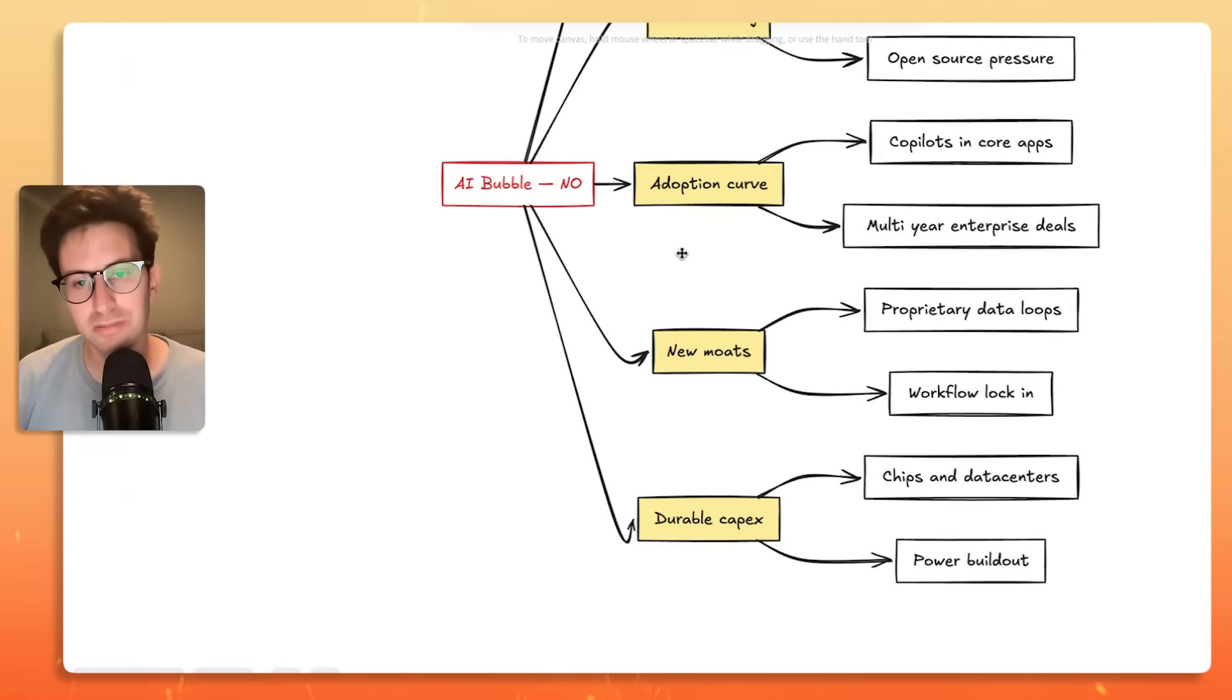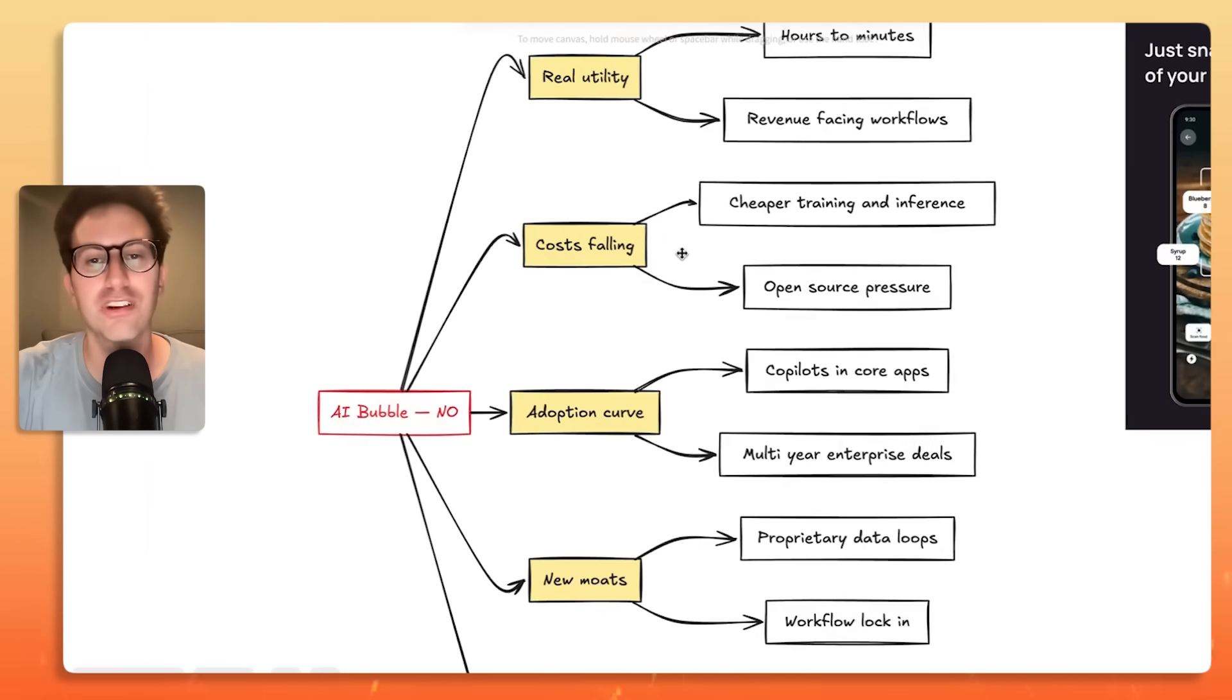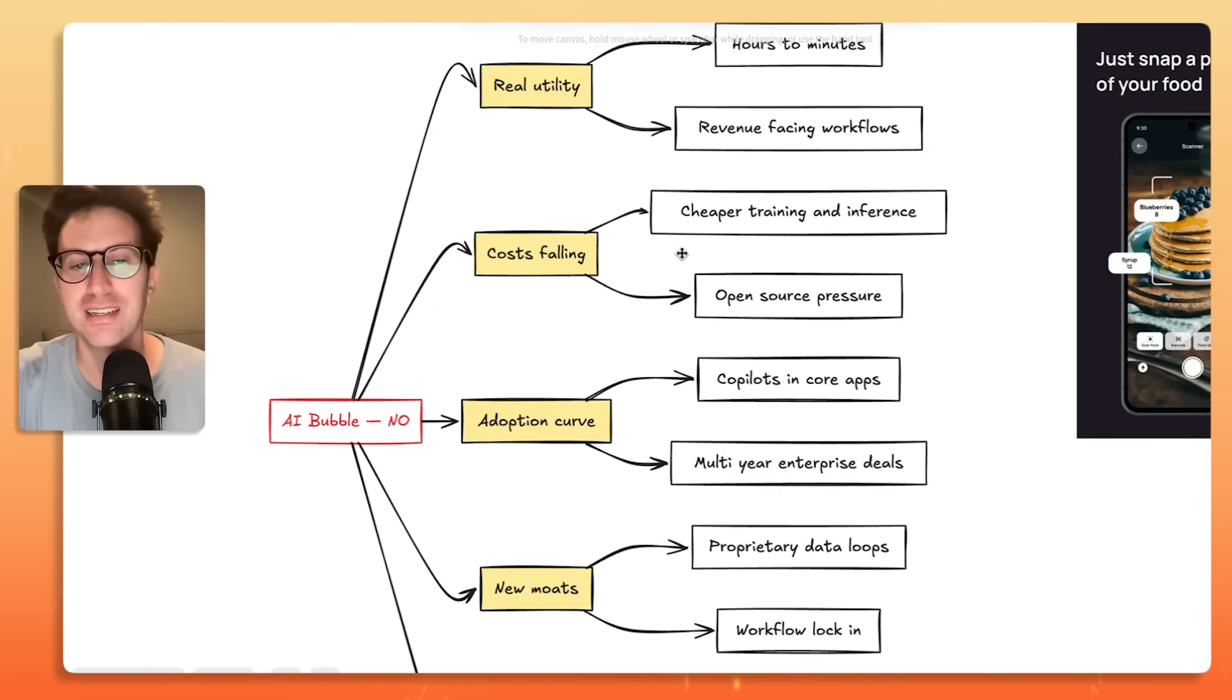There's also new moats that are existing. So there's proprietary data loops that are happening. There's workflow locked in. We kind of talked about that with the adoption curve. And there's durable CapEx, right? There's chips and data centers. There's power build-outs. These are all reasons why there might not be an AI bubble.